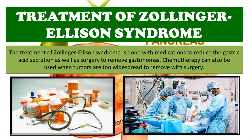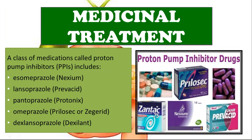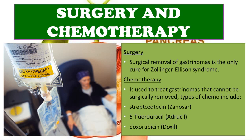Treatment of Zollinger-Ellison syndrome involves medications to reduce gastric acid secretion as well as surgery to remove gastrinomas. Chemotherapy can also be used when tumors are too widespread for surgical removal. The medicinal treatment centers around proton pump inhibitors (PPIs), which reduce acid in the stomach; these include esomeprazole, lansoprazole, pantoprazole, omeprazole, and dexlansoprazole. Surgery is the only cure for Zollinger-Ellison syndrome, while chemotherapy options include streptozotocin, 5-fluorouracil, and doxorubicin.